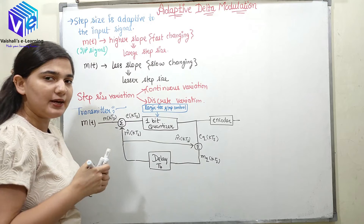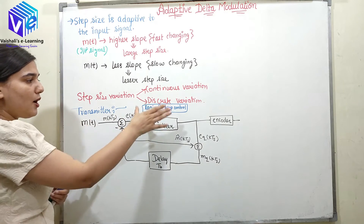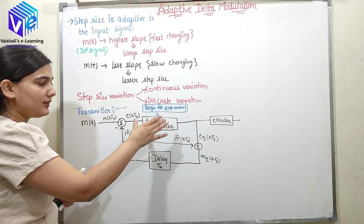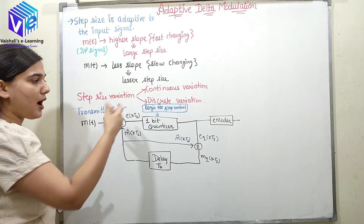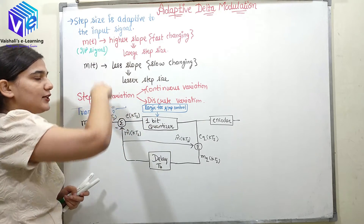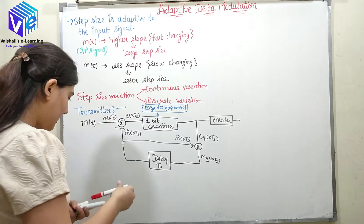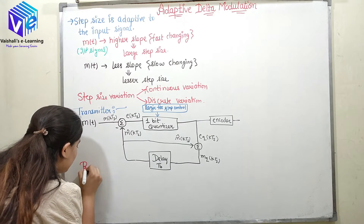The output is fed to the 1-bit quantizer. Now, according to this logic, the step size would change. I have already told you the rule. Now if I talk about the receiver.